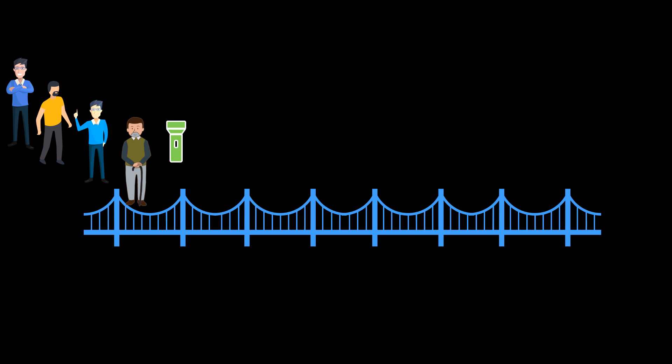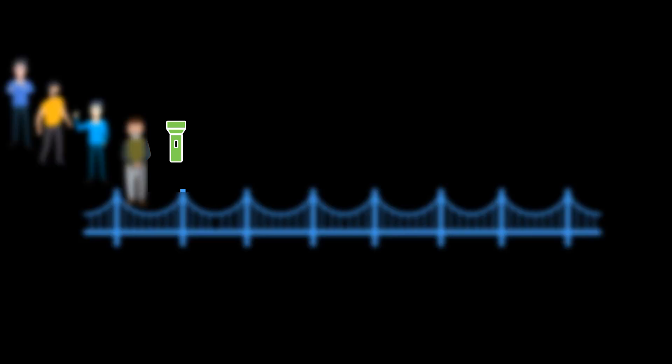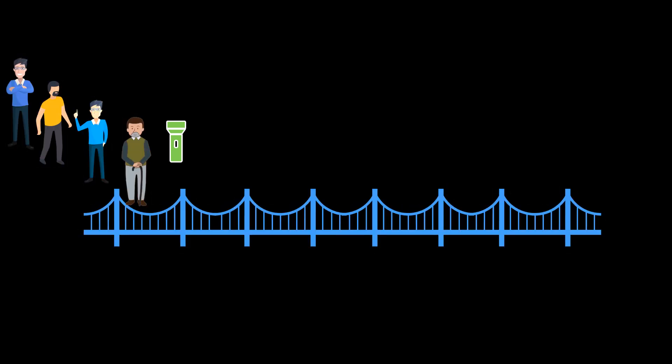It is night time and the people have only one torch. Without the torch one may risk his life crossing the bridge. Also, the bridge is not quite strong and can hold only two persons together at once.